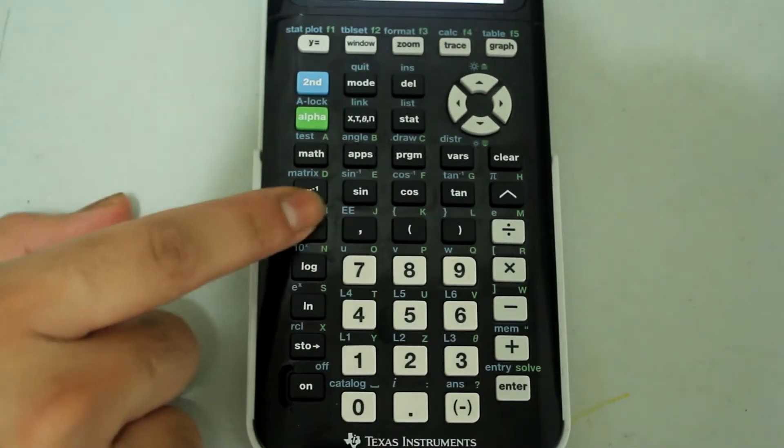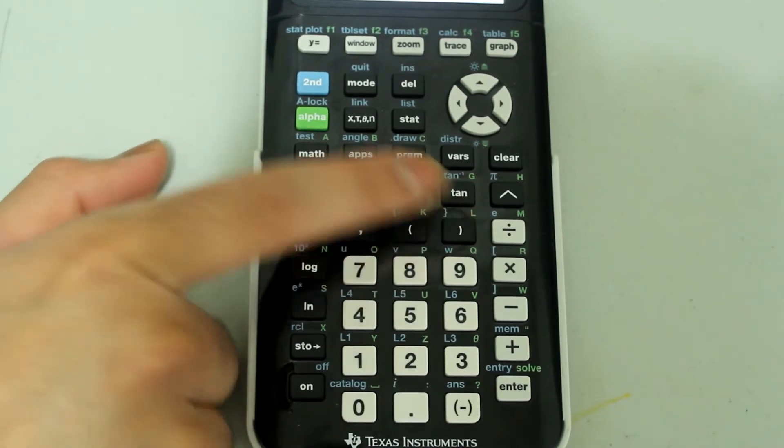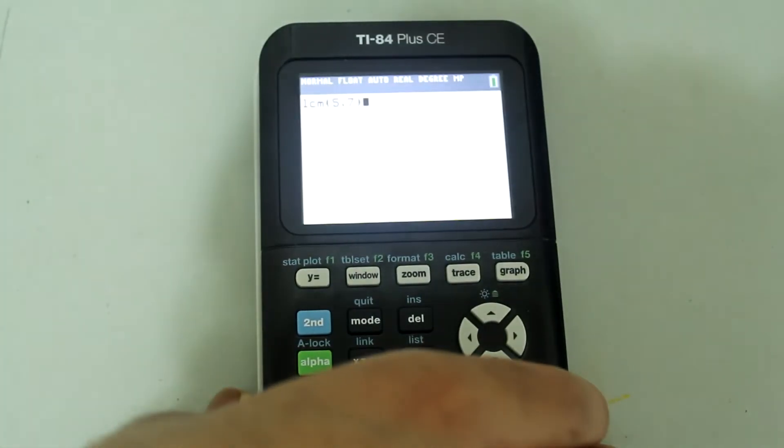I'm going to type in 5 and then comma 7 and then close the parenthesis. So I have this so far.